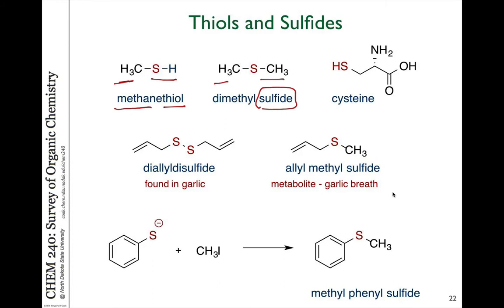Proteins and amino acids contain sulfur as well. This is the amino acid cysteine, and you can see that there's a thiol group present in cysteine. It's very important in protein structures.